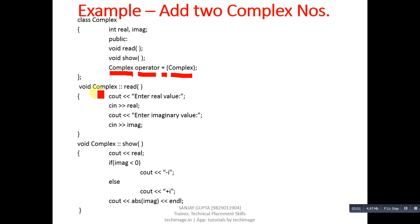Outside the class, the first function defined is 'read', which reads the real and imaginary values. The second function is 'show', which prints the real and imaginary values on the console.